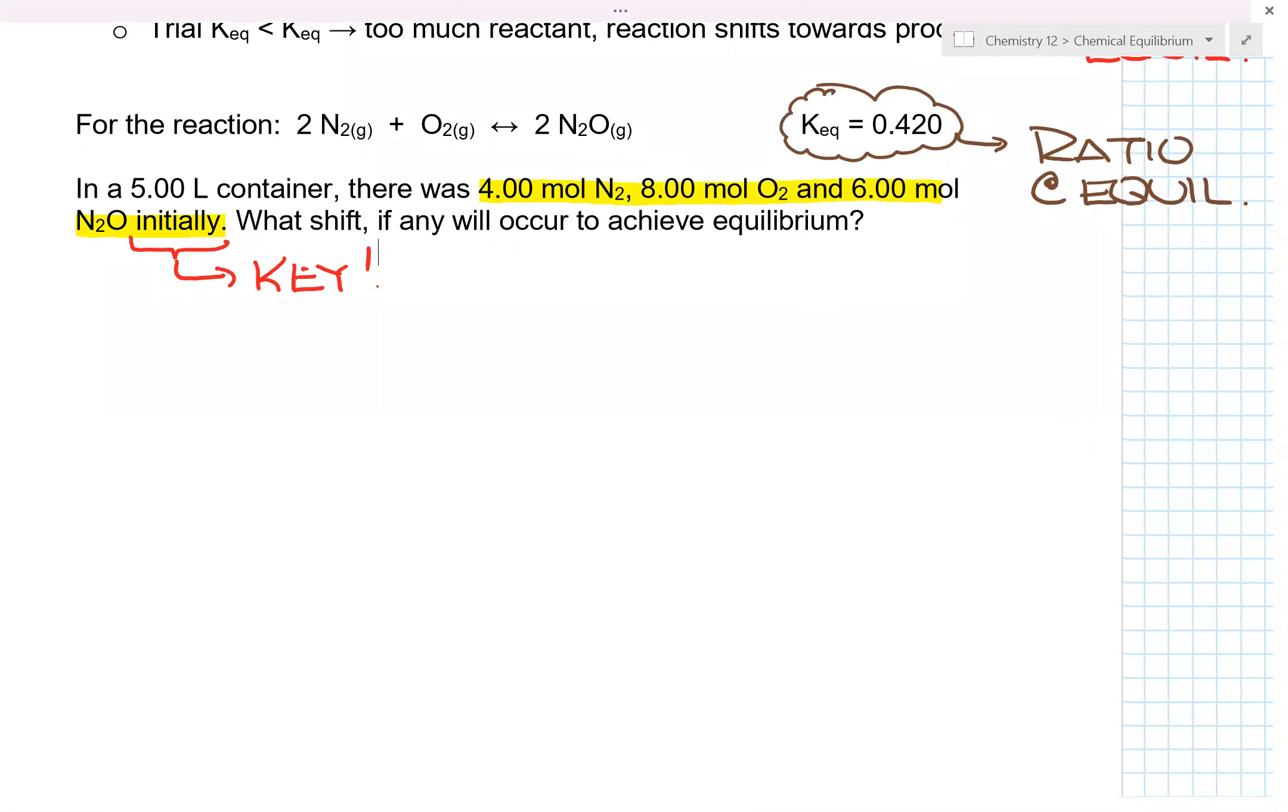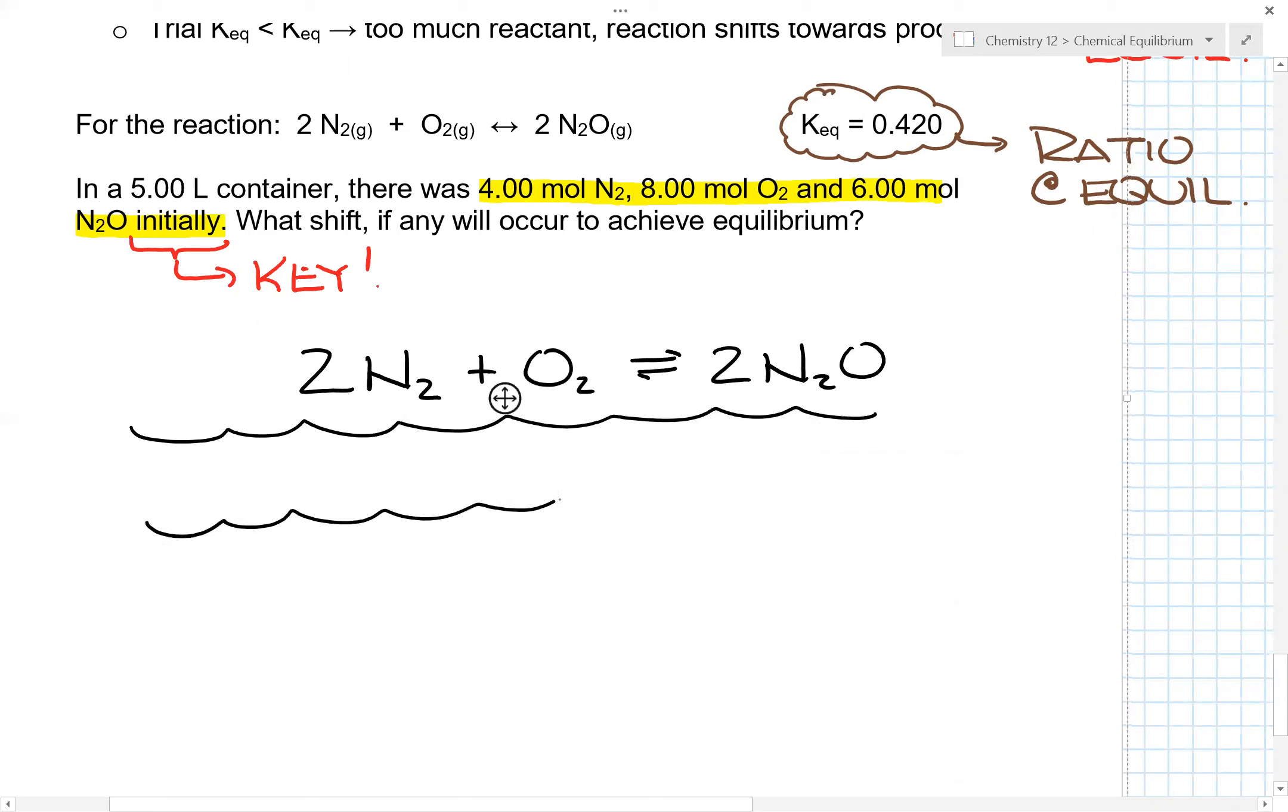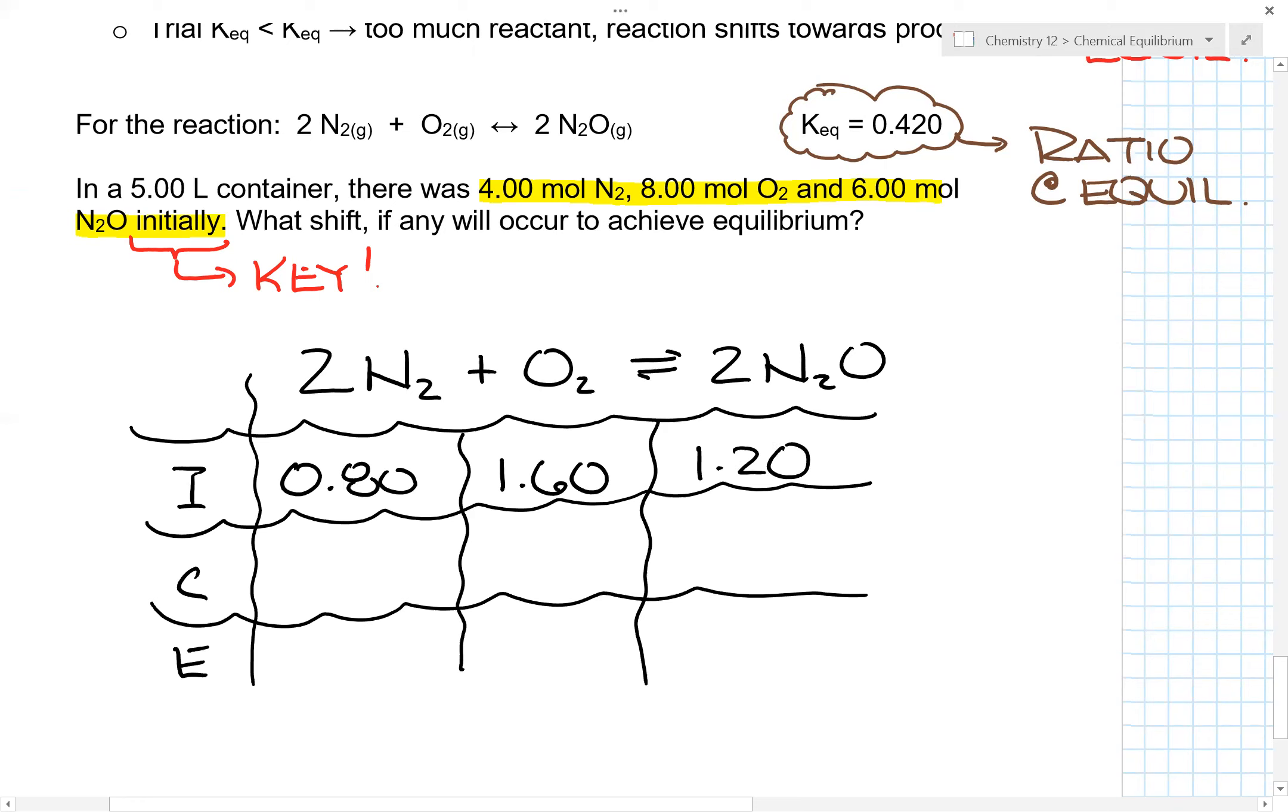So how would we approach a question like this? What you have is, again, we'll set up our ICE tables. So 2N2 plus O2 is in equilibrium with 2N2O. So if we set up our ICE tables here, we have ICE. Now here we have 0.80, 1.60, 1.20.